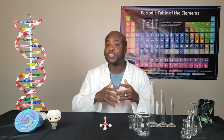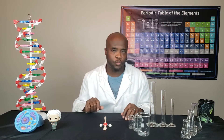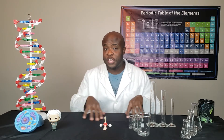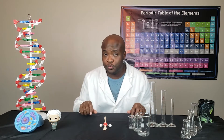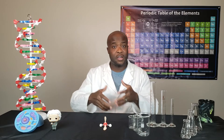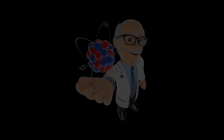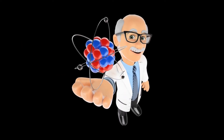He also theorized that everything around us could be explained if we could understand how atoms were. Leucippus and Democritus' theory was later proven to be true when scientists John Dalton and Albert Einstein were able to prove with evidence and math that atoms in fact did exist. Thanks to these two scientists and others such as J.J. Thompson, Ernest Rutherford, Erwin Schrödinger, Niels Bohr, and James Chadwick, each of these scientists contributed to the atomic theory which we know and are studying today.